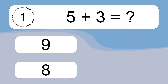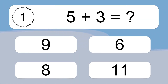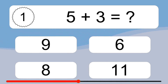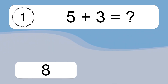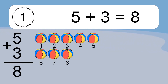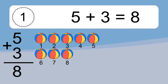5 plus 3 equals what? 5 plus 3 equals 8. Let's count it: 1, 2, 3, 4, 5, 6, 7, 8.